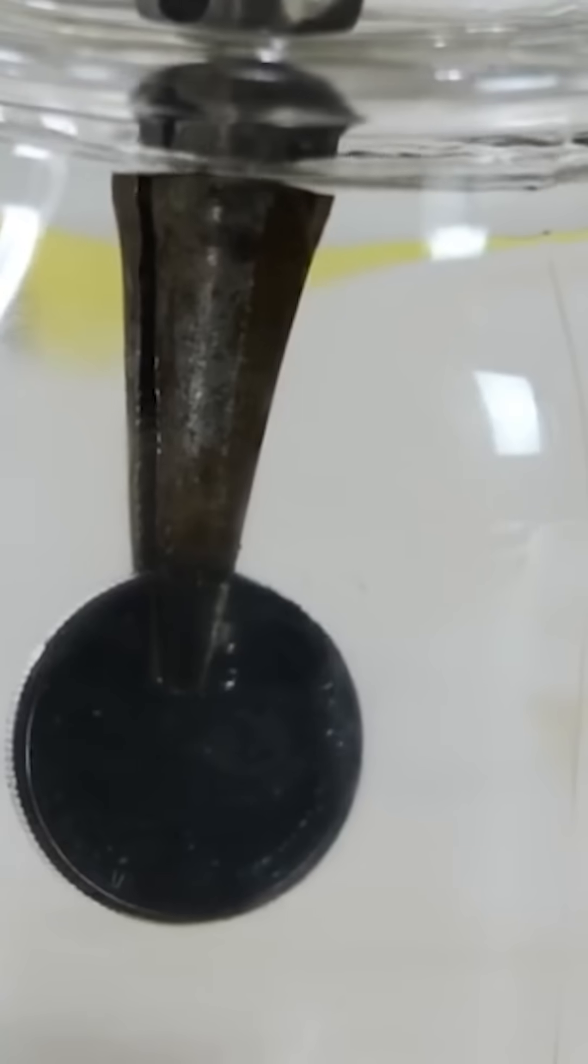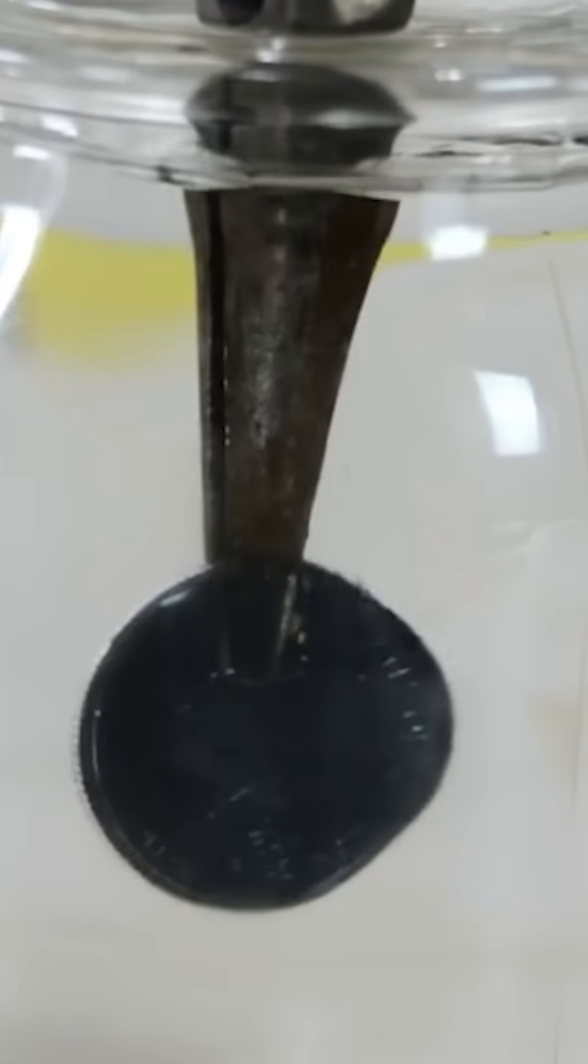Here you can see a quarter coated with the same material. The way I did this is by coating these objects with a layer of soot by holding it over a candle.